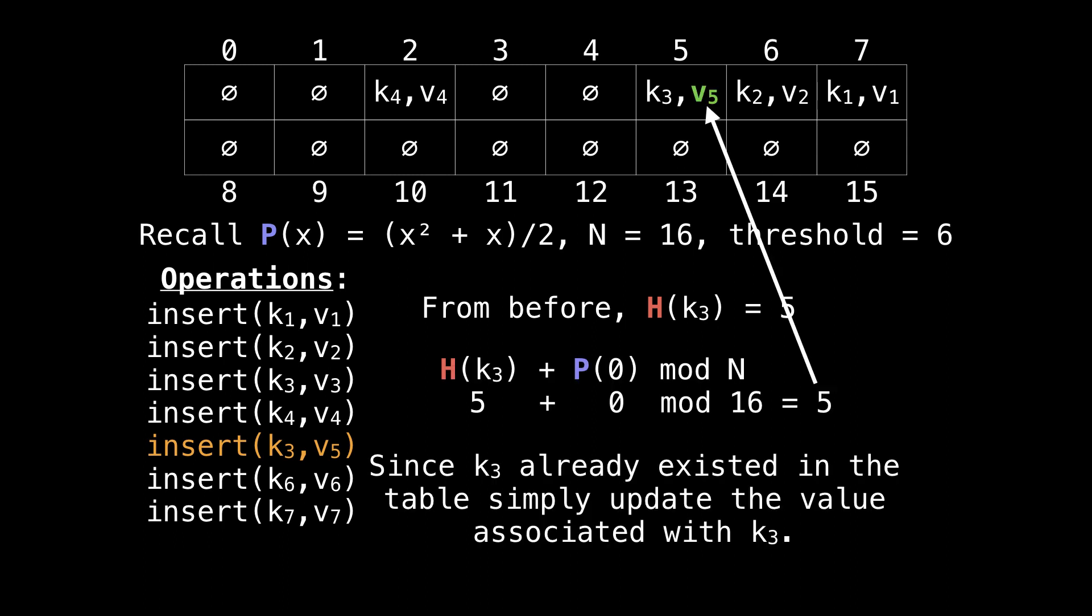Since k3 is already in our hash table, we're going to be performing an update. k3 plus the probing function at 0 gives us 5. So let's update the value to be v5 instead of v3, which it was before.